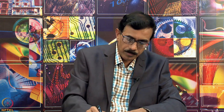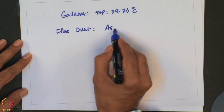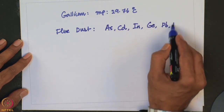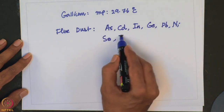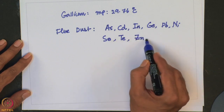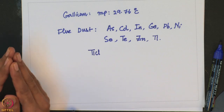Crude thallium is present as a component in flue dust along with arsenic, cadmium, indium, germanium, lead, nickel, selenium, tellurium, and zinc. Thallium is prepared by dissolving flue dust in dilute acid, precipitating out lead sulfate, and then adding HCl to precipitate thallium chloride (TlCl). Further purification can be achieved by electrolysis of soluble thallium salts.